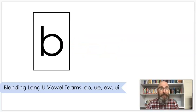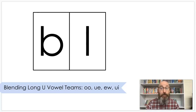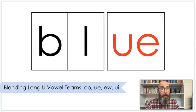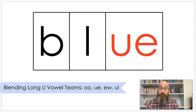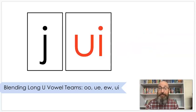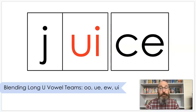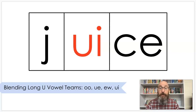Sound B, Sound L. Put that together. Blu. Blue. Blue. The sky is blue. Sound J, Sound U. Put that together. Juice. Juice. You might have some apple juice or orange juice for breakfast.